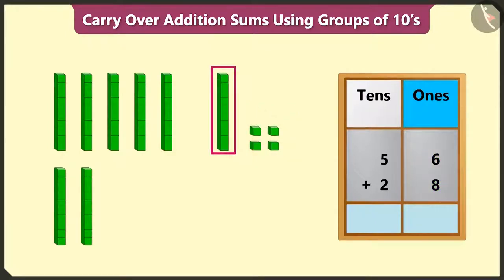And out of 14 ones, we can form a group of 1 tens. So, 14 has 1 tens and 4 ones. Now, we have to write 4 in the ones box.